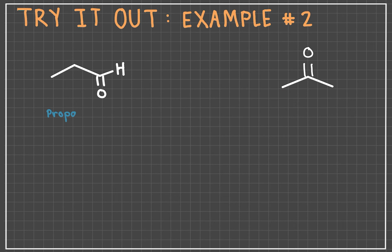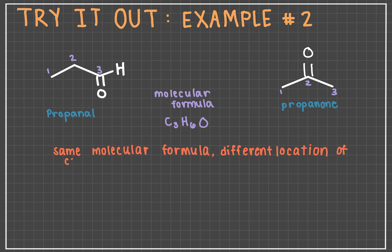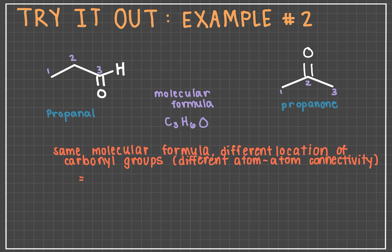Example two: propanol versus propanone. These molecules are constitutional isomers. If you began by finding the molecular formula for both, you'd see that they are identical: C3H6O. The atom-to-atom connectivity of the two molecules does differ, though — the carbonyl groups are located at different positions. Therefore, the atom-to-atom connectivity is different, and they are constitutional isomers.